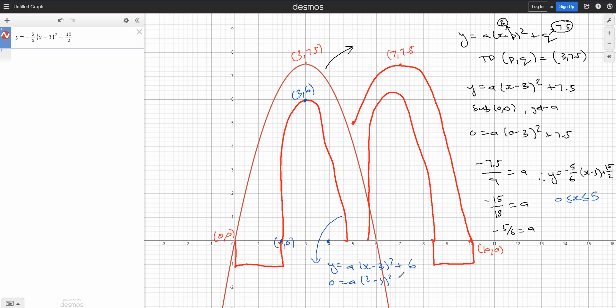And I make x equals to 2 and y equals to 0. It gives me negative 1 squared, which is 1, and it becomes negative 6. So therefore, this equation is y equals to negative 6 x minus 3 squared plus 6. And let's put that in there as well.